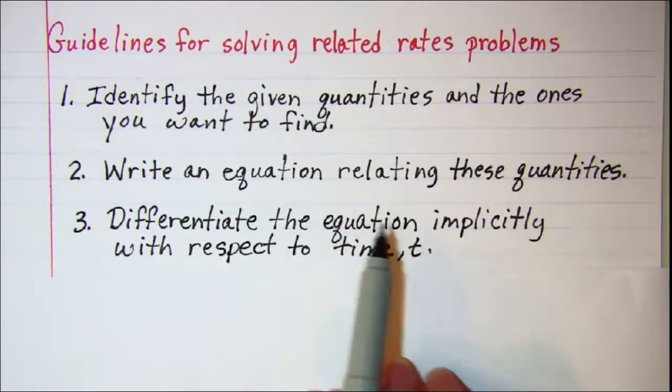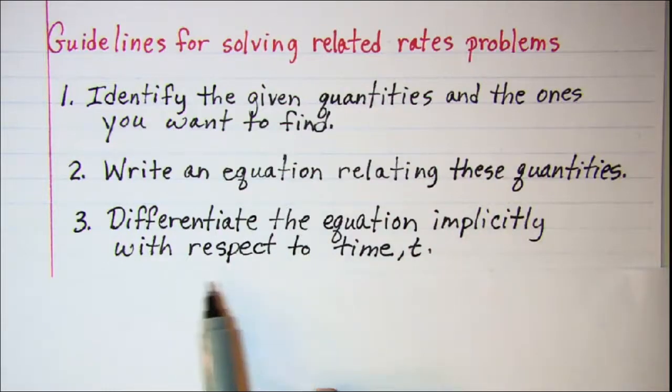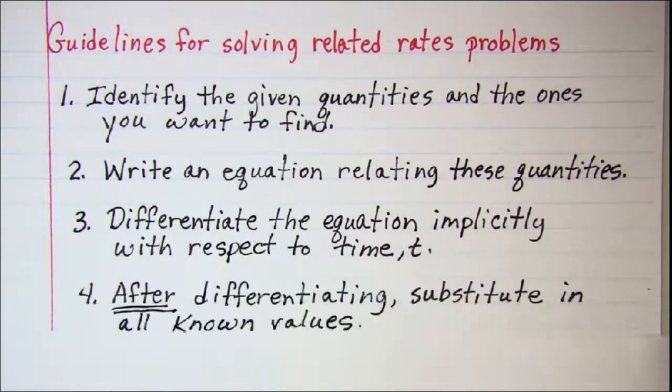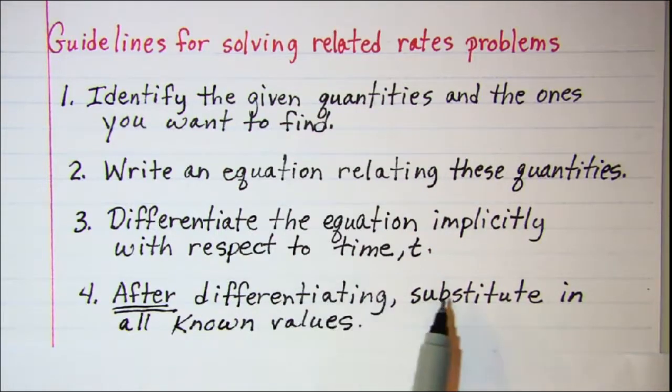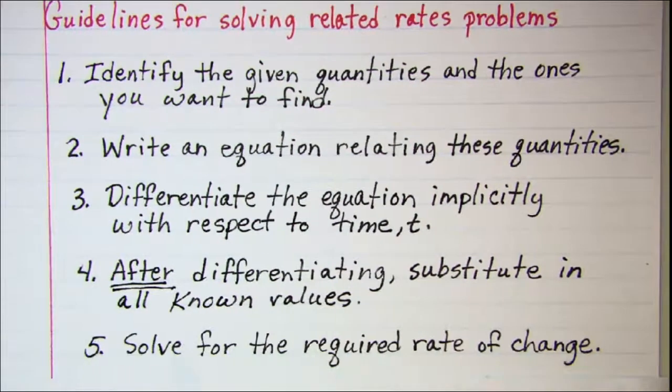Differentiate the equation implicitly with respect to time t, and then after differentiating, substitute in all known values. Finally, solve for the required rate of change.